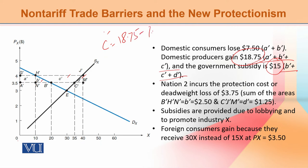18.75 minus 7.50 = 11.25۔ اگر آپ یہ find out کریں تو C-bar کا area 11.25 آئے گا۔ کیونکہ آپ نے A-bar اور B-bar نکال لیا ہوا ہے تو C-bar آپ easily نکال سکتے ہیں — C-bar is 11.25.